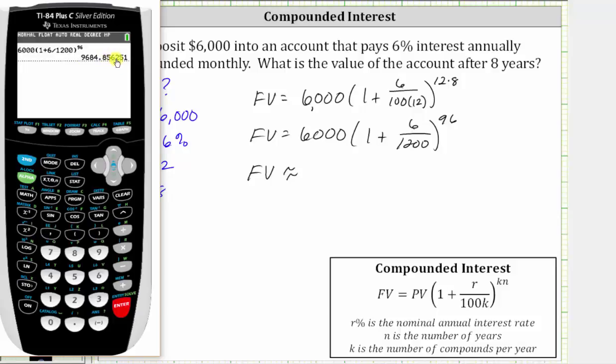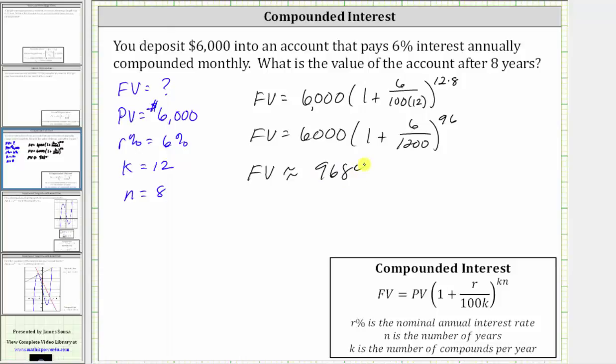We round up because there is a six in the thousandths place value. Now we know after eight years, the value of the account will be $9,684.86.